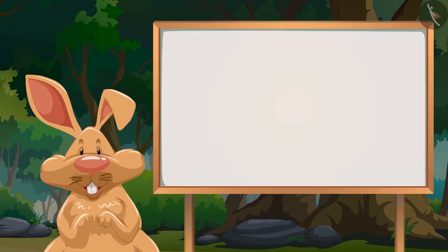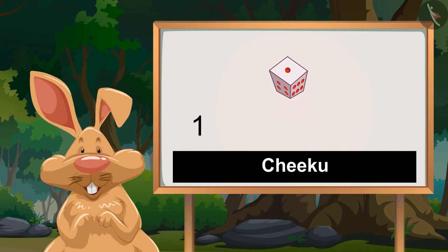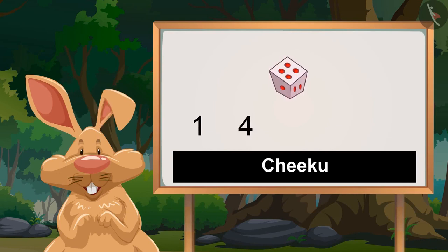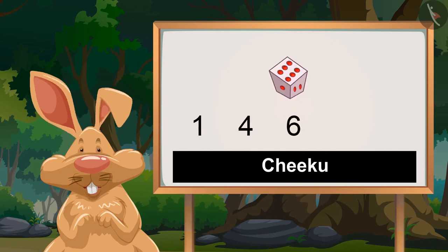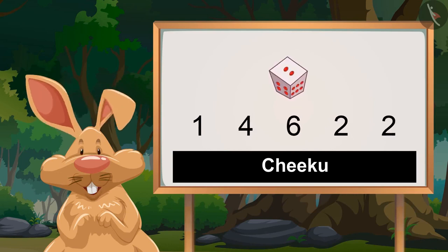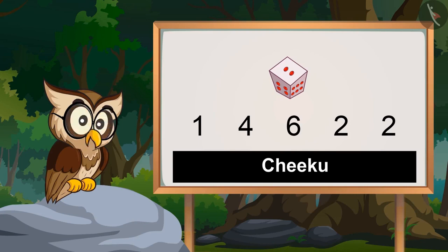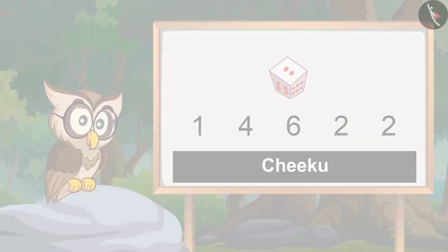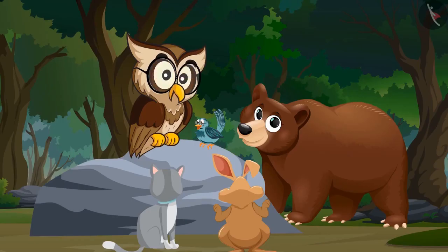We will write down the numbers you get on rolling the die. Okay, I will roll first. One, four, six, two, two. So Chiku got these numbers on the dice.